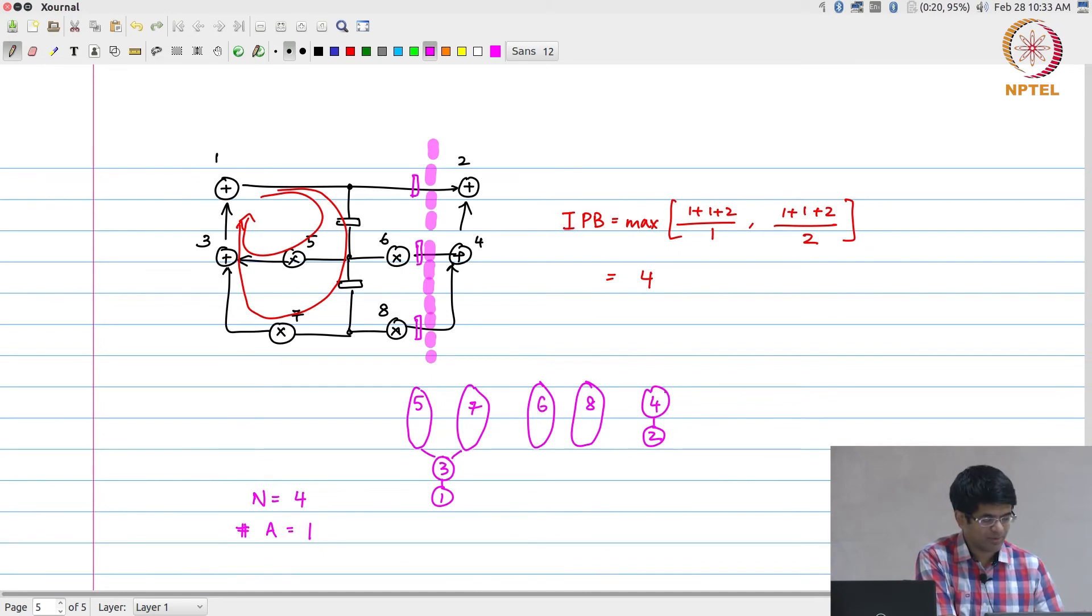One thing to keep in mind - operation 4 and operation 2 actually have some mobility. Operation 4 could have been scheduled in step 1 or step 2, and operation 2 could have been scheduled in step 2 or step 3. They have a mobility of 2 time units. But if I push them later, I end up needing 2 adders in step 2 or step 3 or both. If I keep them as early as possible, then I can finish operation 4 and operation 2, and 3 and 1 can be done in steps 2 and 3. The number of adders can be made equal to 1.